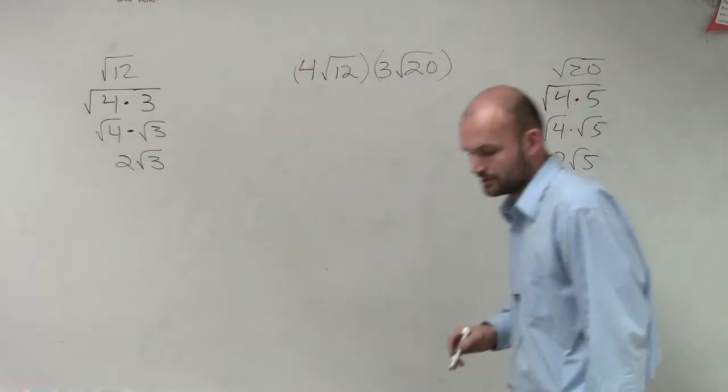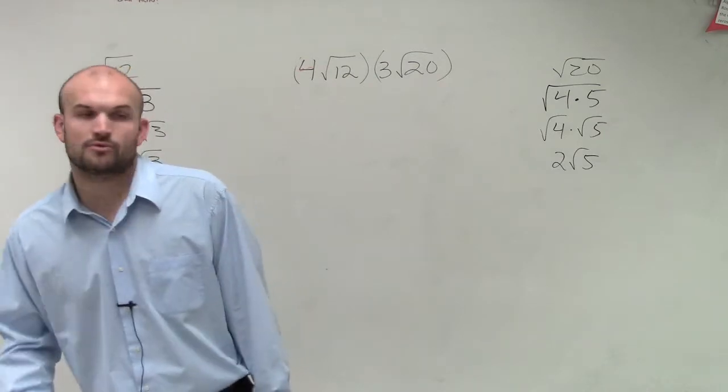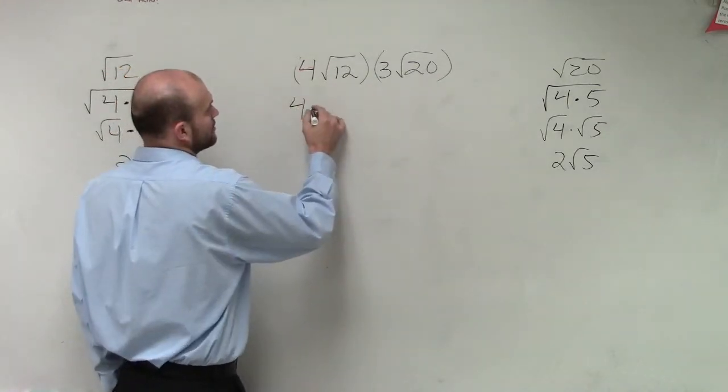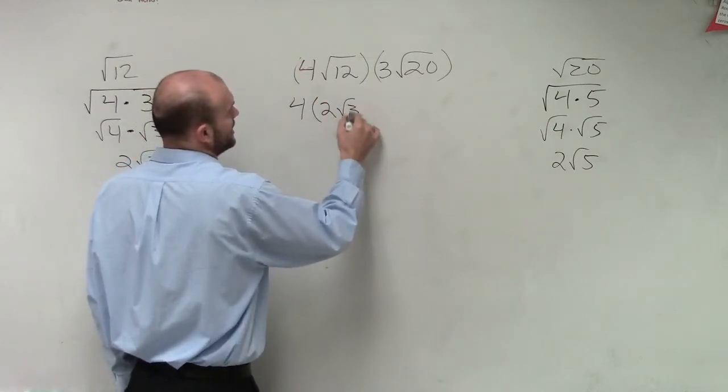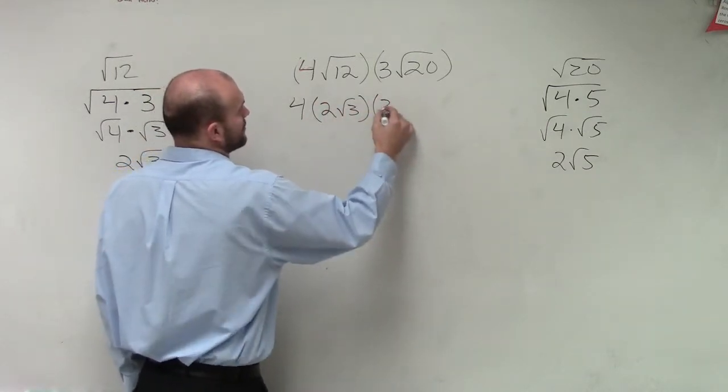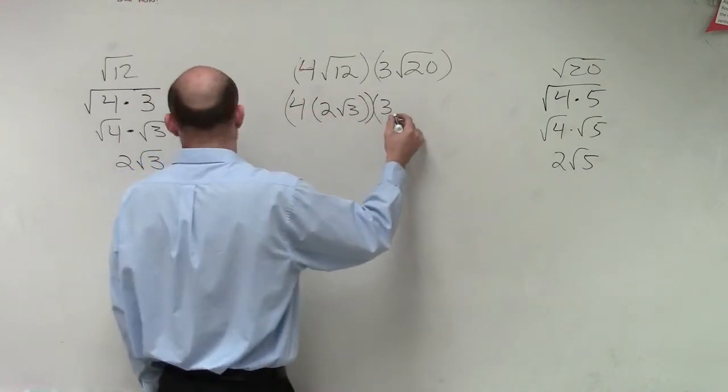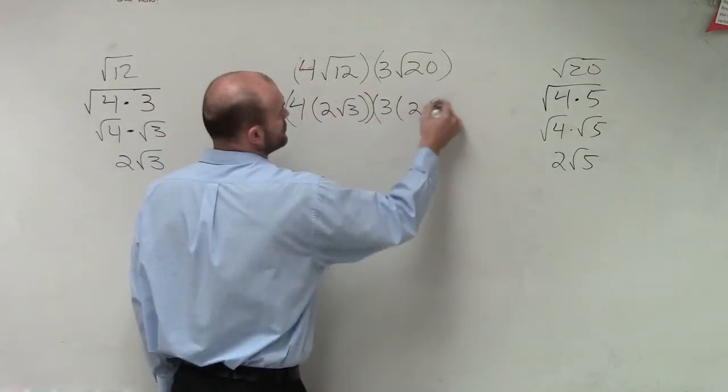So now, what I'm going to do is replace the square roots of my number with my simplified version. So, I have 4 times 2 square root of 3 times 3 times 2 square root of 5.